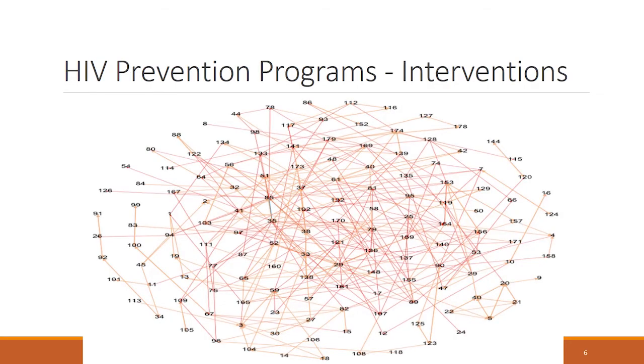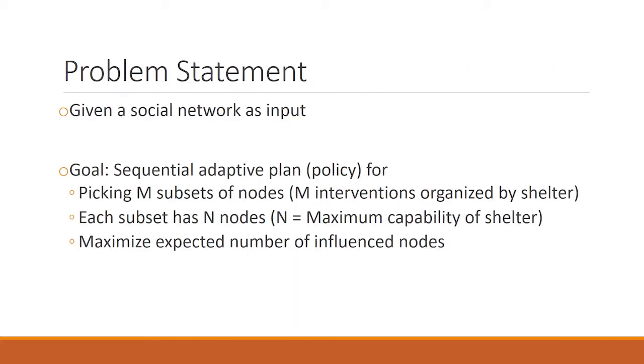This encouragement to spread messages is important because homeless youth, just like us, are connected in one big social network. For example, this is the friendship-based social network of homeless youth who visited a homeless shelter in Los Angeles over some period. Every number you see here is a homeless youth, and the edges between the numbers represent friendships between the youth.